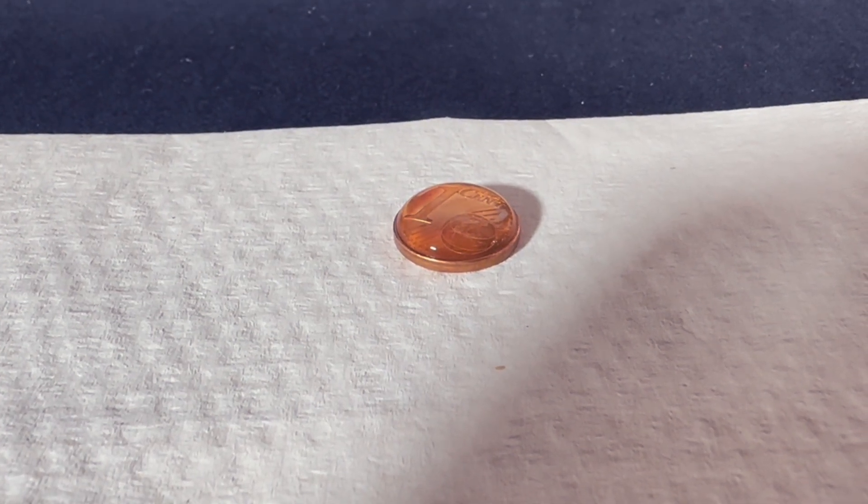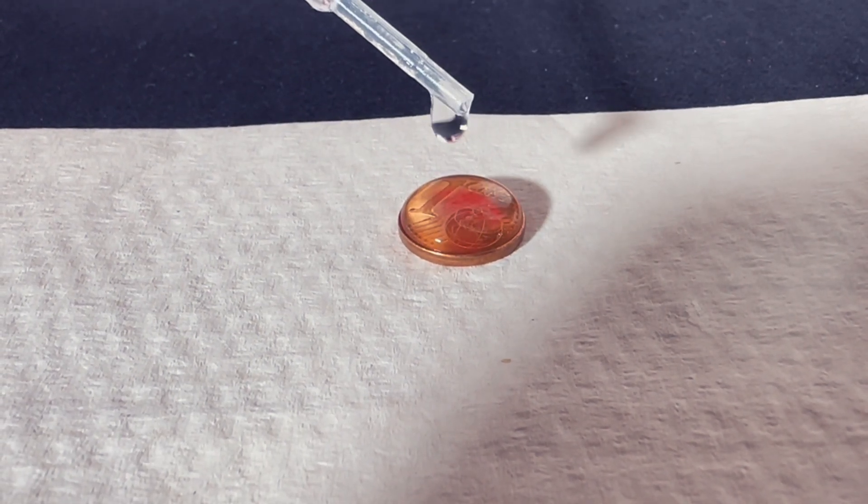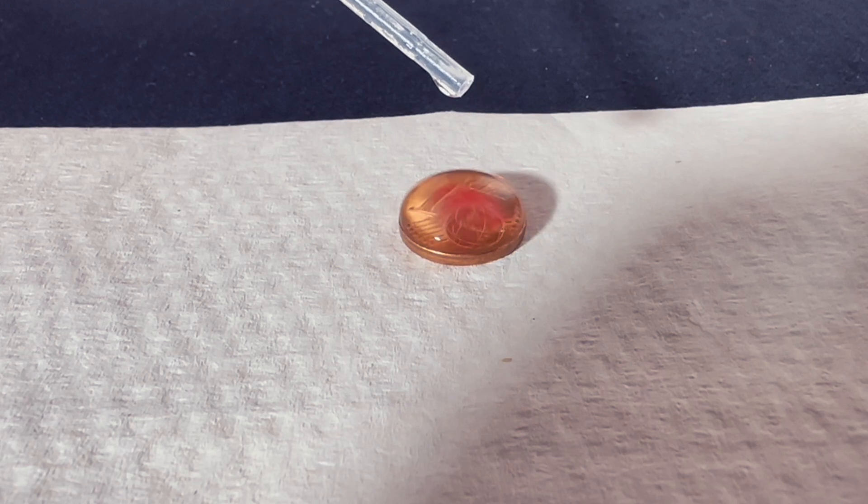Due to the surface tension of the water, the coin can even be overfilled. That is, the large drop of water protrudes a little sideways beyond the edge.